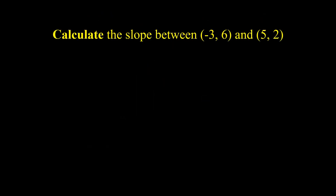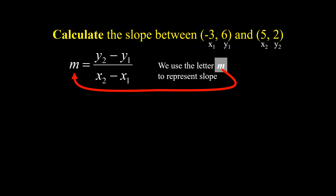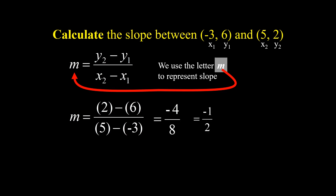How about calculating the slope between points (-3, 6) and (5, 2) using the slope formula? The slope formula is m equals y sub 2 minus y sub 1 over x sub 2 minus x sub 1. We use the small letter m to represent slope. From the given: x sub 1 is -3, y sub 1 is 6, x sub 2 is 5, and y sub 2 is 2. Substituting: 2 minus 6 over 5 minus negative 3 equals negative 4 over 8, or negative 1 half. Same answer — negative 1 half.